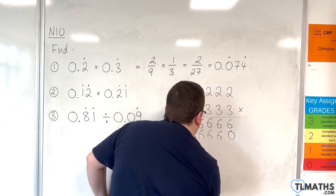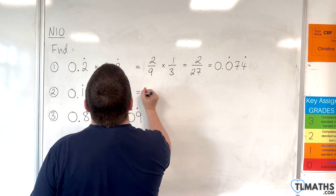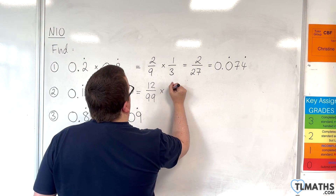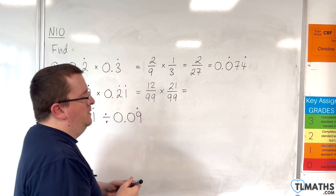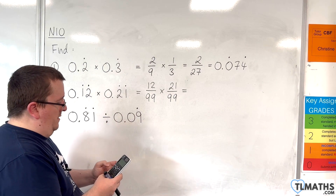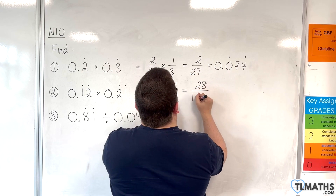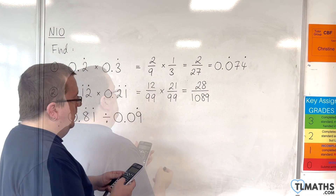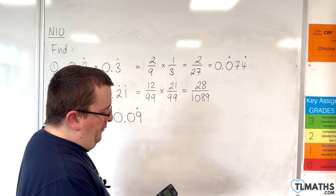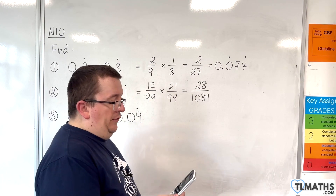For the next one: 0.121212 recurring. That's going to be 12 over 99. And 0.212121 recurring is 21 over 99. So 12/99 times 21/99 gives us a simplified fraction of 28 over 1089.